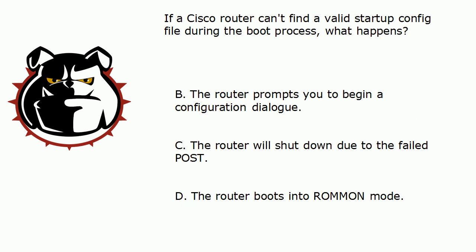Now, option C says the router will shut down due to a failed POST. This is one of those answers you have to watch, because if the POST — the power-on self-test — fails, the router is going to end up shutting down. But not finding a valid startup config file is not considered a failed power-on self-test. That's more like checking for memory corruption. The number one POST failure, really, is a fan — they'll call it an environmental concern on the screen. If the fan isn't working, there's no reason for the router to boot up. So that would be a power-on self-test failure and would shut the router down, but a missing startup config file is not.